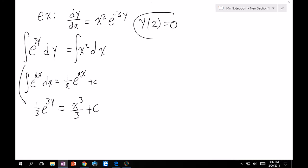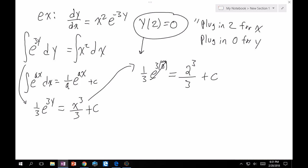But now I need to apply my initial condition in order to find my particular solution. Whenever you see this, you should think, okay, I need to plug in 2 for x and plug in 0 for y. Applying that here, I'll have 1 third e to the 3 times 0 is equal to 2 cubed over 3 plus c. e to the 0 is nothing other than 1, so this is 1 third is equal to 2 cubed is 8, so 8 over 3 plus c. Therefore, my c is just minus 7 thirds.